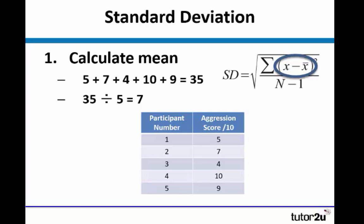So 5 add 7, add 4, add 10, add 9 is 35. We divide that by the number of participants we have, which is 5, and that gives us the answer 7.